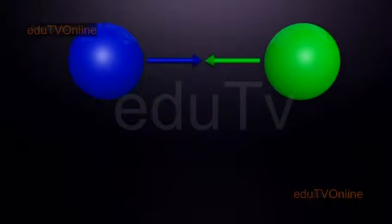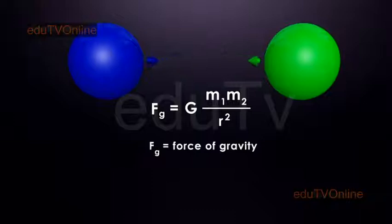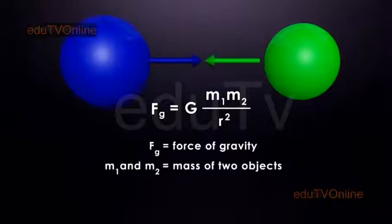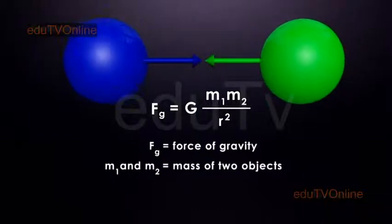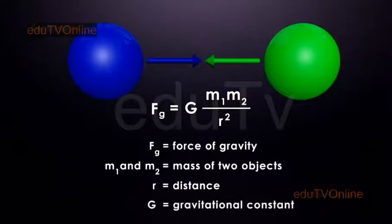Newton's law of gravitation can be expressed in an equation: FG equals G multiplied by M1 multiplied by M2, whole divided by R squared, where FG is the force of gravity between two objects of mass M1 and M2, R is the distance between the center of the two masses, and G is the gravitational constant.